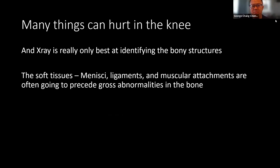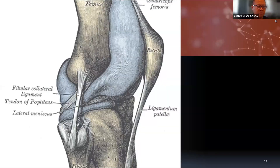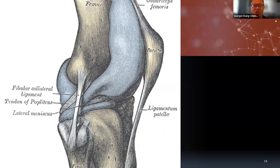This is a very important point: many things can hurt in the knee. X-ray is only good at identifying bony structures; soft tissues — menisci, ligaments, muscular attachments — will have pathology that precedes gross abnormalities in the bone. The synovium is not just a fluid-filled sac. People think of it as just reducing friction in a joint, or as something you can scrape out — an '-ectomy.' But the synovium is actually very complex and biologically active, with distinct inner and outer layers.